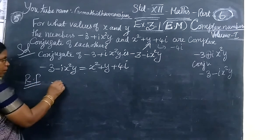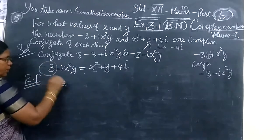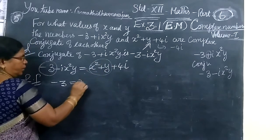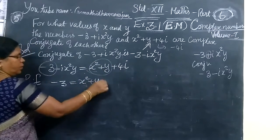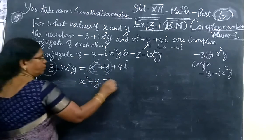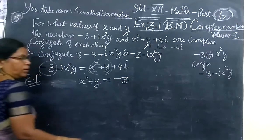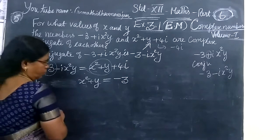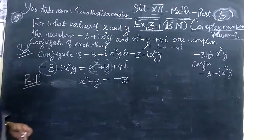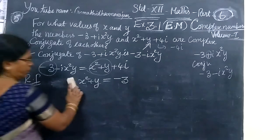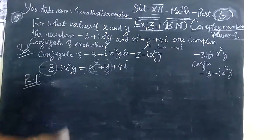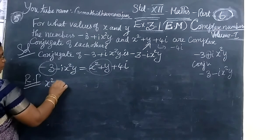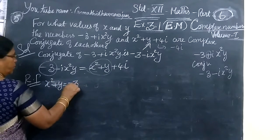Now we equate the real parts and imaginary parts. Equating real parts: minus 3 equals x times y plus y. Equating imaginary parts: minus x times y equals the imaginary part, which gives x times y plus y equals minus 3.